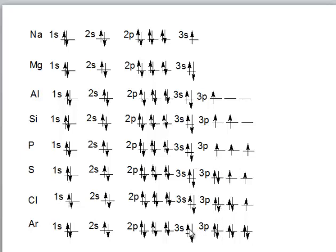Also note that when we arrive at the end of the row, argon, we have filled the 3s and 3p subshells. Here at the end of the third row, we conclude the fourth lecture for Unit 7. More on orbital diagrams and electron configurations will be discussed in the next lecture.